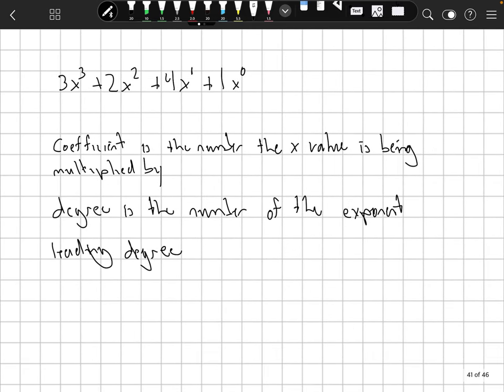Okay, let's take a look at the next slide. Important parts of polynomials. So I've got a polynomial up here. The coefficient is the number the x value is being multiplied by. So here we have a coefficient of 3. For this term we have a coefficient of 2. For this term we have a coefficient of 4. And for this term, well, that's probably a bad one to erase on.